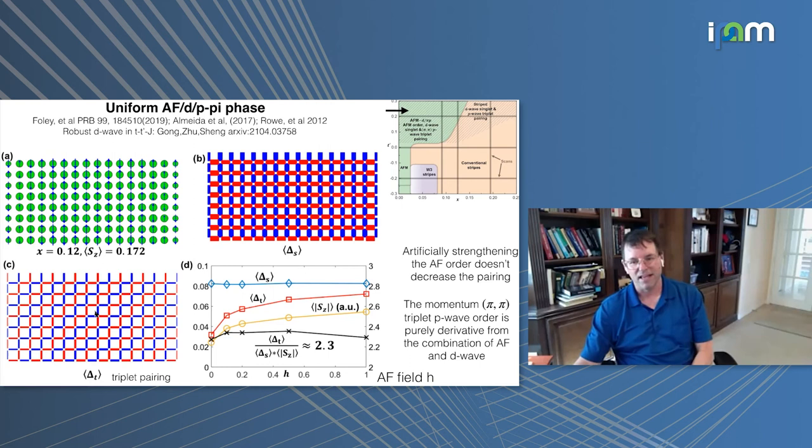So it has momentum pi pi and it's purely the result of having these two primary orders driving it. We can see the relationship between these orders. This is a little experiment where we put on an anti ferromagnetic magnetic field on the system to increase the anti ferromagnetism even more. The interesting thing is that the singlet D wave superconductivity is hardly affected by increasing the anti ferromagnetism to quite large levels. The triplet superconductivity is just riding on top of the S sub Z. So the S sub Z increases, the triplet goes in sync. If you plot the ratio, which is on the right hand scale, it's staying roughly constant. So it's really just induced from this combination.